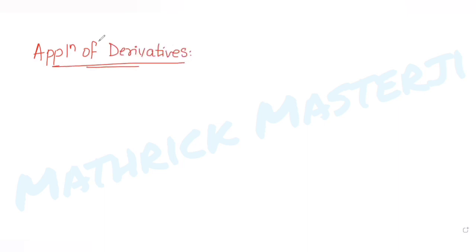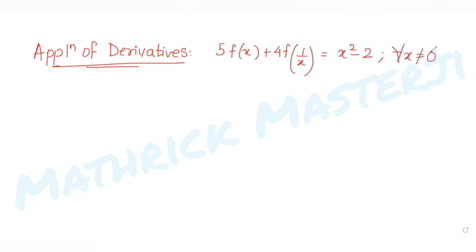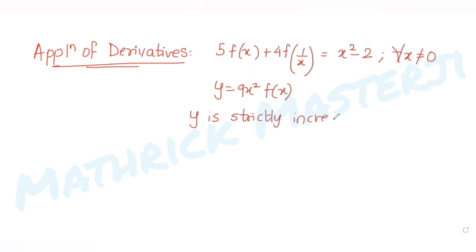Today's question is from the topic of application of derivatives. The question tells us that if five times f(x) plus four times f(1/x) equals x² minus 2, where all values of x are possible except zero, and y is 9x² times f(x), the question asks us where y is strictly increasing.